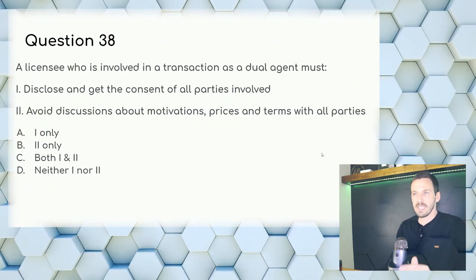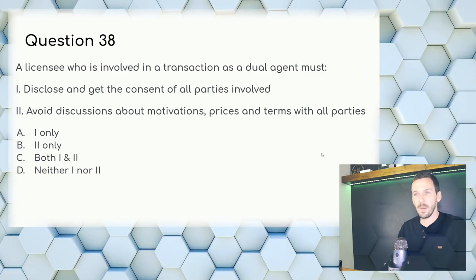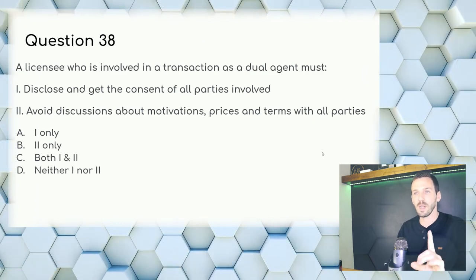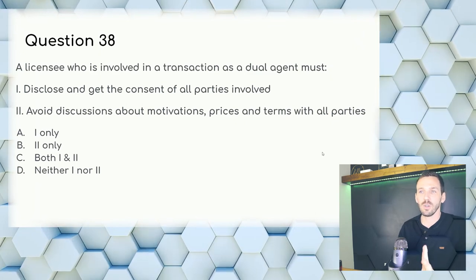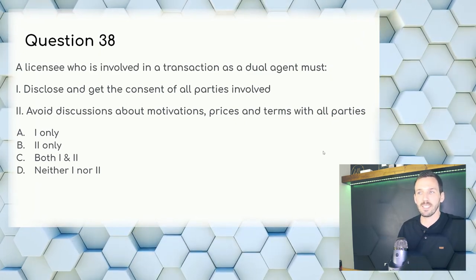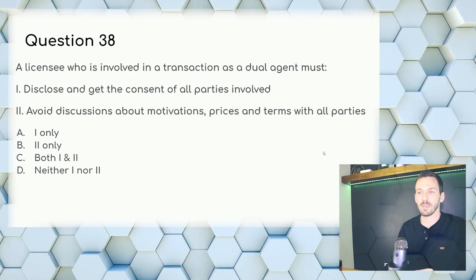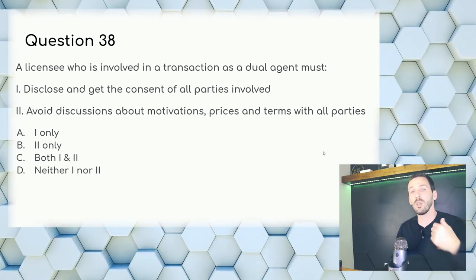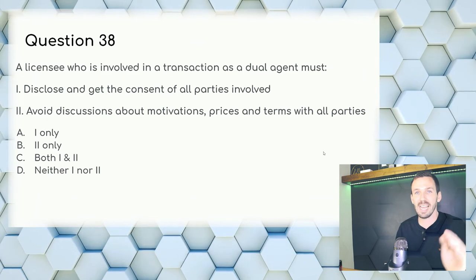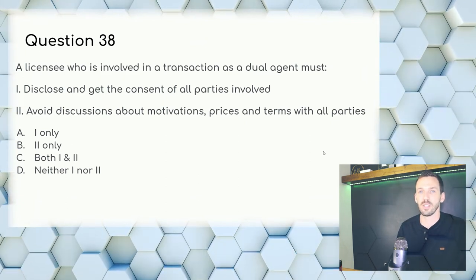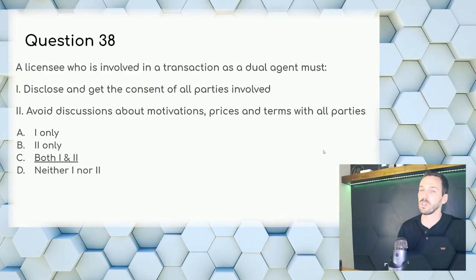Question 38: A licensee involved as a dual agent must — as a dual agent you have a responsibility to be fair to both parties and must disclose your situation. Answer: C, both one and two — disclose and get the consent of all parties involved, and avoid discussions about motivations, prices, and terms with all parties.